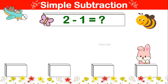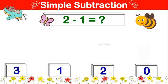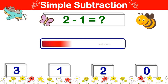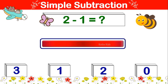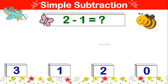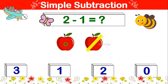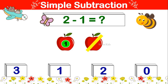2 minus 1 is equal to. Let's take 2 and subtract 1 from it. 1, 2. Now let's subtract 1 from it. 1 remaining is 1. 2 minus 1 is 1.